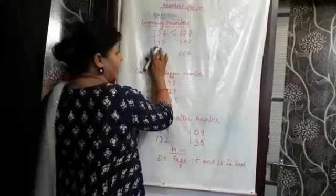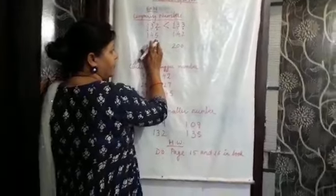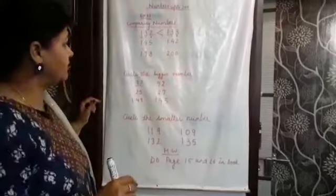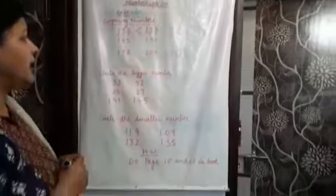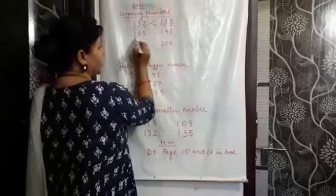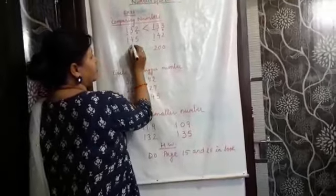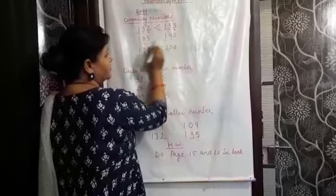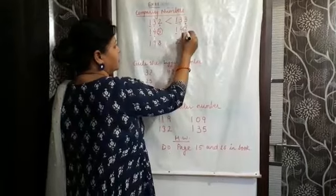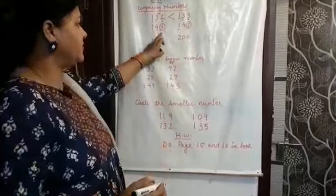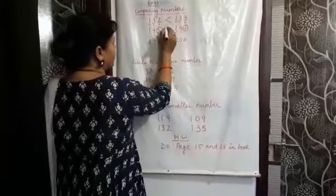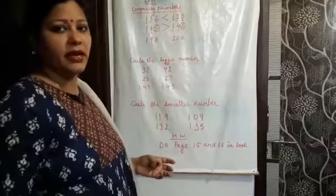Now see one more example. Here we have 145 and 142. Again, first we will compare the numbers at the hundreds place — it is the same. Then we will move to the tens place — again it is the same. Then we will compare the numbers at the ones place. Here it is 5 and here it is 2. Which number is bigger? 5 is bigger, so we will make the sign toward this side.